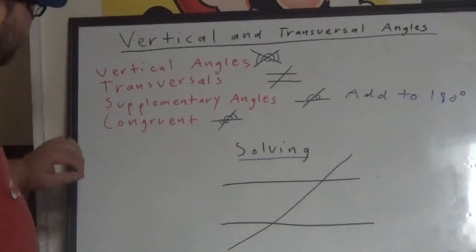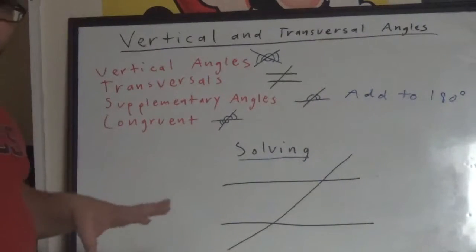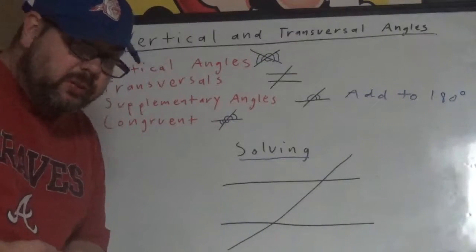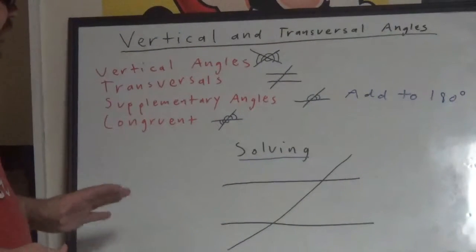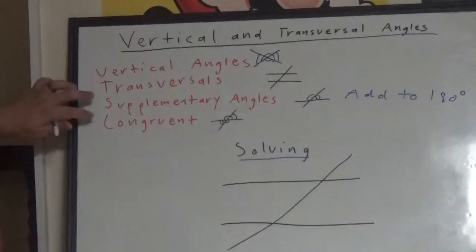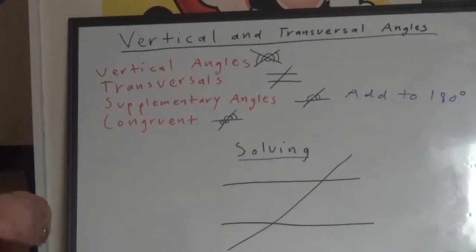And then, congruent means the same measurement. We'll use that word a lot in geometry. In this case, we're just talking about angle measurements. These are the two main things that we're using as far as what we're solving for, or what we're using to solve.